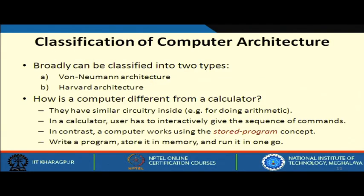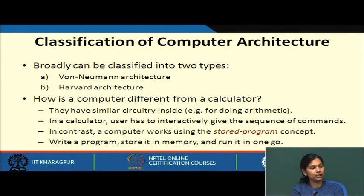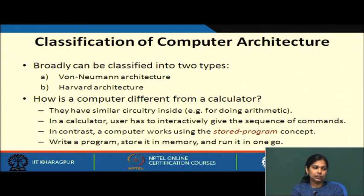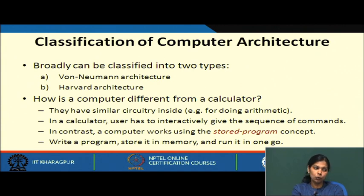Now we will see the classification of computer architecture. Broadly, it can be classified into two types: von Neumann architecture and Harvard architecture. Both of these kinds of architecture are used in today's computing.